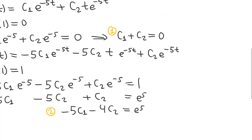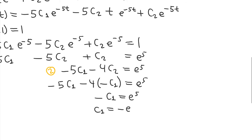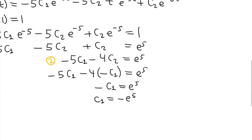From the first equation I'll solve for c2, getting c2 = -c1. Substituting that into the second equation gives -5c1 - 4(-c1) = e^5, so the left-hand side simplifies to -c1 = e^5, meaning c1 = -e^5. Going back to our first equation, c2 is the negative of c1, so c2 = -(-e^5) = e^5.